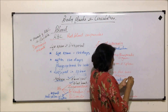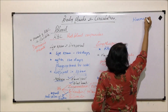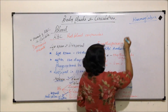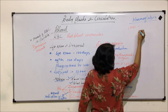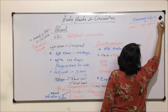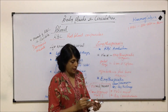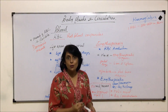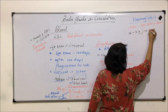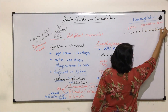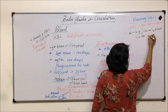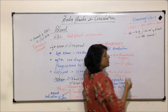Now let us come to the last part — hemoglobin. Hemoglobin is present in RBCs. One RBC has about 200 to 280 million hemoglobin molecules. In terms of quantity, it is 12 to 16 grams per 100 milliliters of blood. This is called the hemoglobin count, just as we had the RBC count.